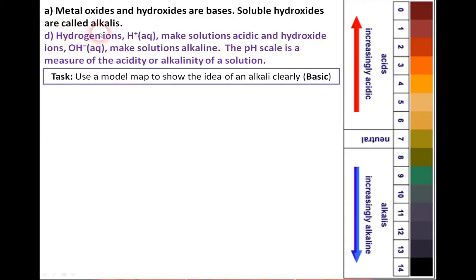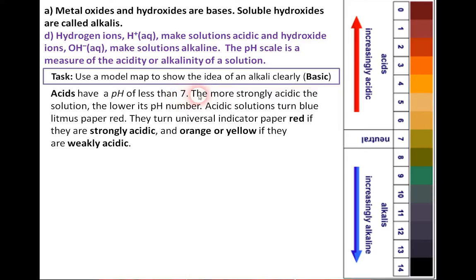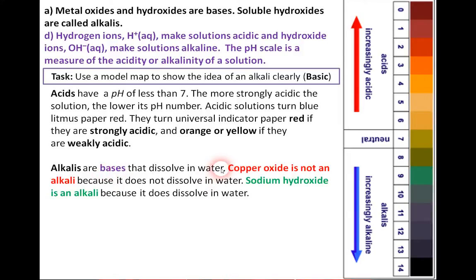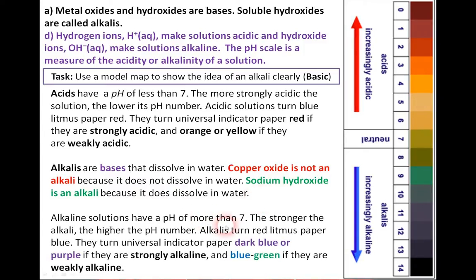Soluble hydroxides are alkalis. Hydrogen ions make solutions acidic and hydroxide ions, OH−, make solutions alkaline. The pH scale is a measure of acidity or alkalinity of a substance. Acids have a pH of less than 7; the more strongly acidic a solution is, the lower the pH number. Acidic solutions turn blue litmus paper red, or turn universal indicator red if strongly acidic, orange or yellow if weak. Alkaline solutions have a pH of more than 7; the stronger the alkali, the higher the pH number.